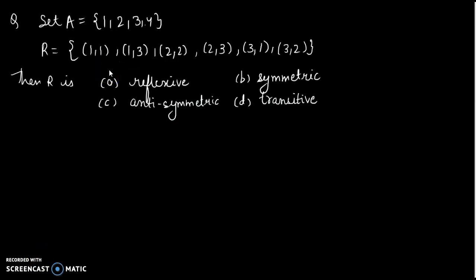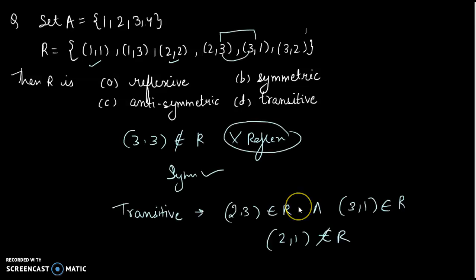Pause the video and try this question. Here (1,1) is there, (2,2) is there, but (3,3) does not belong to R — so it's not reflexive. For symmetric: (1,3) is there and (3,1) is there; (2,3) and (3,2) are there — so it is symmetric. For transitive: (2,3) and (3,1) belong to R, but (2,1) does not belong to R — not transitive. Answer: option B. I'll be uploading the chapter MCQs. Thank you.